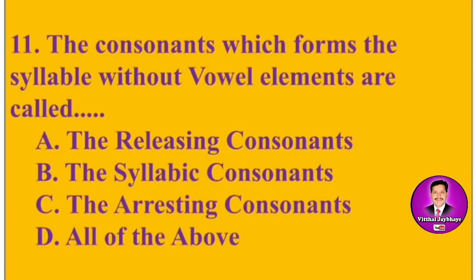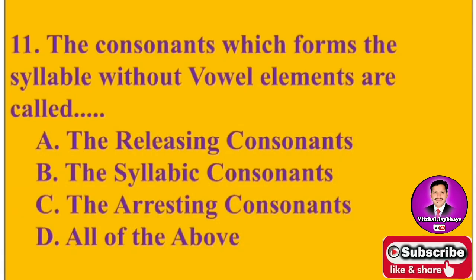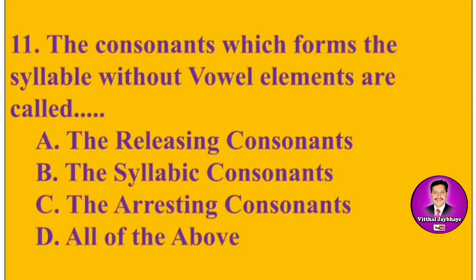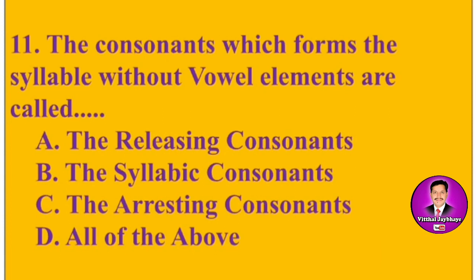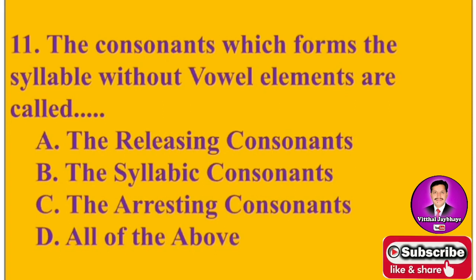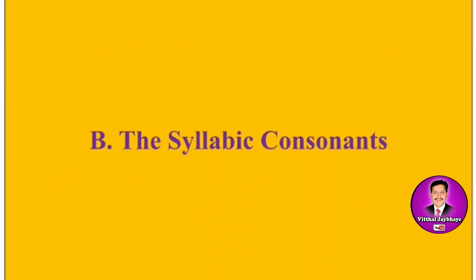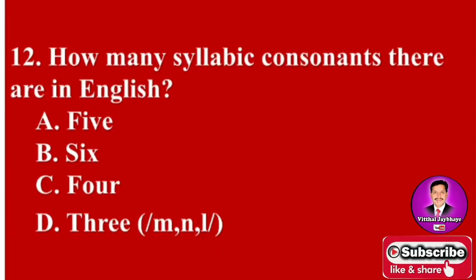Next MCQ: The consonants which form the syllable without vowel elements are called dash-dash-dash. Options are A: the releasing consonants, B: the syllabic consonants, C: the arresting consonants, D: all of the above. This is a very interesting and crucial question. The correct answer is B — the syllabic consonants.